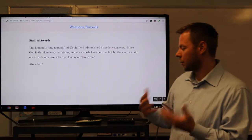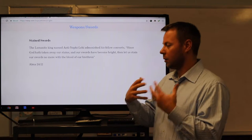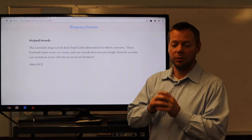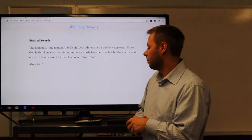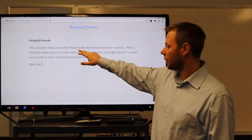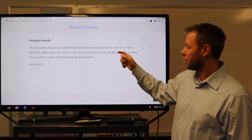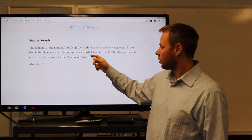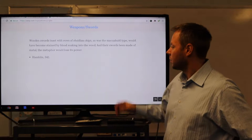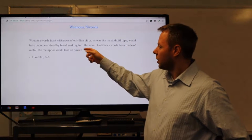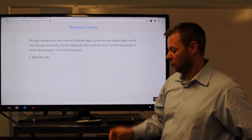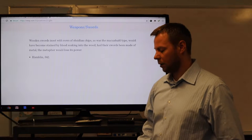One thing that Hamlin pointed out that I thought was pretty interesting, trying to understand the text better and learn more about the Book of Mormon through historicity was this idea of the sword, the maquahuit that we talked about last week, which was the wooden sword with the obsidian teeth on the end. So in Alma 24:12, the anti-Nephi-Lehi, the new Lamanite king, admonished his fellow converts. Since God has taken away our stains and our swords have become bright, then let us stain our swords no more with the blood of our brethren. Hamlin made an interesting point. He said, wooden swords inset with rows of obsidian chips, as was the maquahuit type, would have become stained by blood soaking into the wood. Had their swords been made of metal, the metaphor would actually lose its power. It's hard to stain something with metal, but you can stain wood with blood. So I thought that was, again, made the imagery more powerful for me.